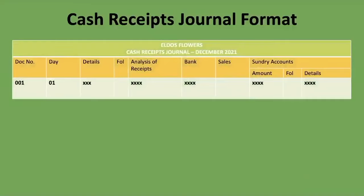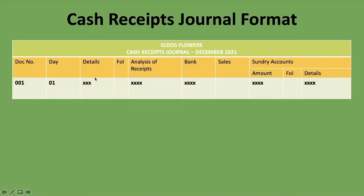Here is the format for the cash receipts journal. You've got the name of the company — for example, Elders Flowers — then the name of the journal and the period. The first column is your document number; if you're not given one, you may put them in sequence: one, two, three, and so forth. Then you've got the day of the month, followed by the details column — the name of the person or entity that deposited or brought money to the business.